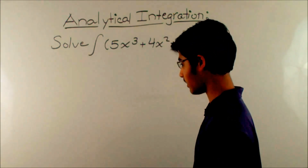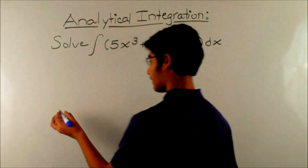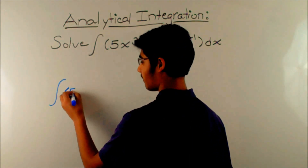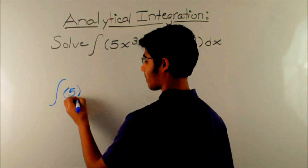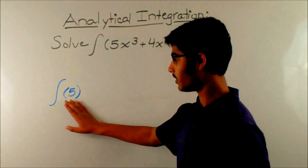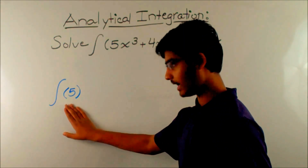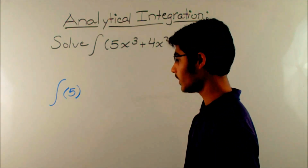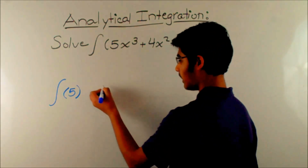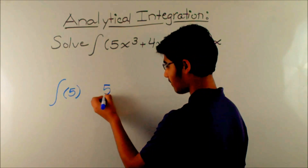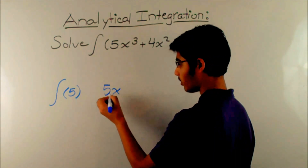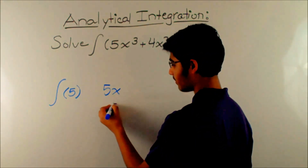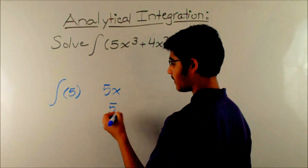Let's take another example. Let's say we have to find the indefinite integral of 5. What function would 5 be a derivative of? Well, we know that according to the power rule for derivatives, if you have 5x, then the derivative is 5.